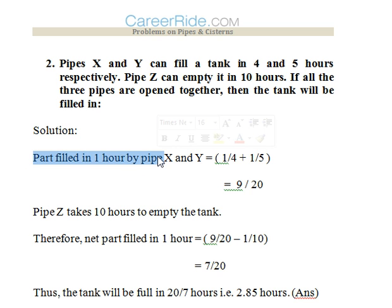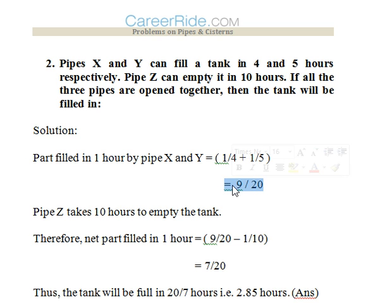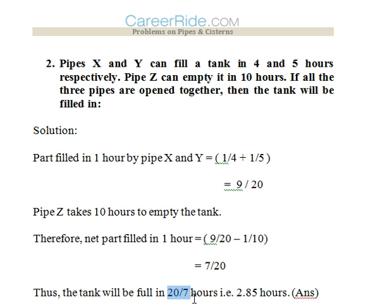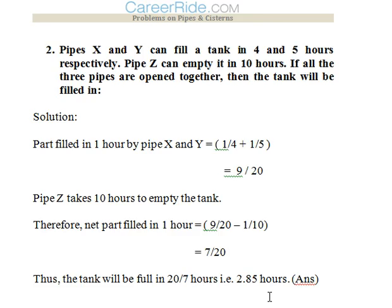Part filled in 1 hour by pipe X and Y would be 1/4 plus 1/5, that is 9/20. Now pipe Z takes 10 hours to empty the tank, so how much it would empty in 1 hour is 1/10. So we would subtract 1/10 from 9/20. Net part filled in 1 hour with the leakage counted in: 9/20 minus 1/10, that is 7/20. So the reciprocal would be 20/7, which is 2.85 hours — that is the answer.